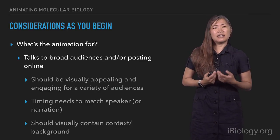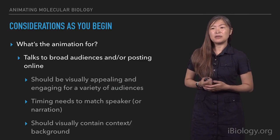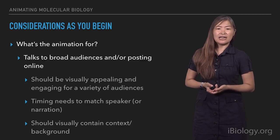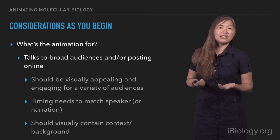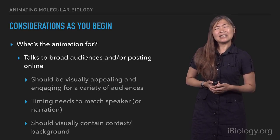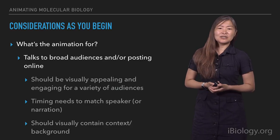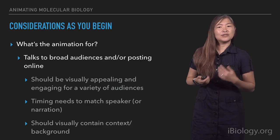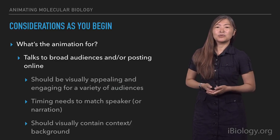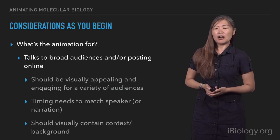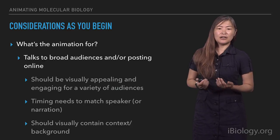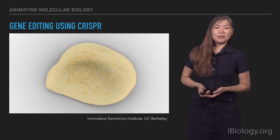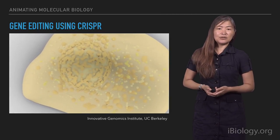When thinking about an animation for broader audiences — either for a talk or posting online — different considerations apply. You have to think about that audience: if you're trying to appeal to a high school student or a member of the general public, you really need to tell a story well, in an engaging way. This usually means making it as visually appealing as possible. Adding context and background helps people understand the story better. These are often narrated animations, so timing needs to match the speaker's narration. An example is this animation of gene editing using CRISPR.